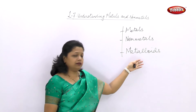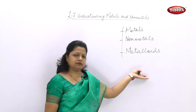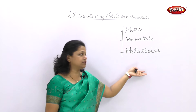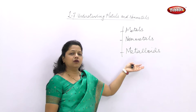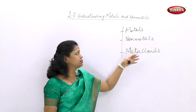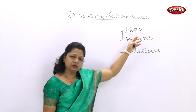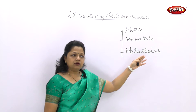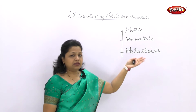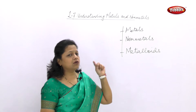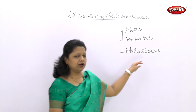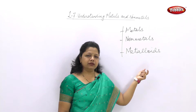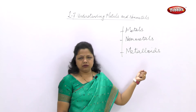But then, what are metalloids? Metalloids are substances which have the properties of both metals and non-metals. Examples of metalloids include germanium, antimony, silicon, etc.